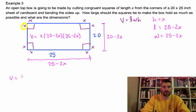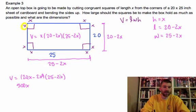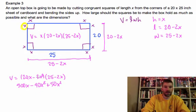I'm going to distribute my x real quick, and that's going to be 20x minus 2x squared times (25 minus 2x), and then just multiply this part out. So 20x times 25, that's 500x, and then 20x times the negative 2 is minus 40x squared, and then negative 2x squared times 25, that's minus 50x squared, and then negative 2x squared times negative 2x plus 4x cubed.